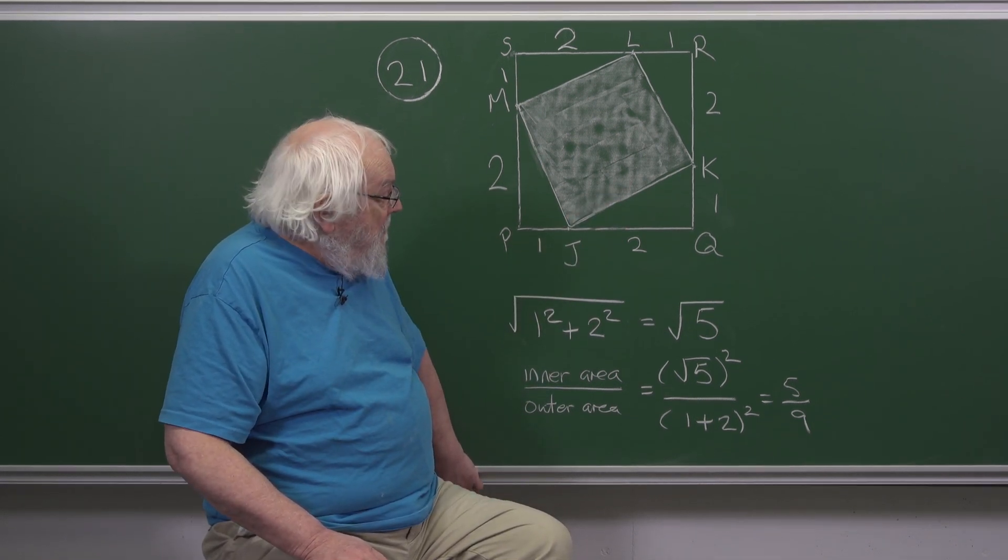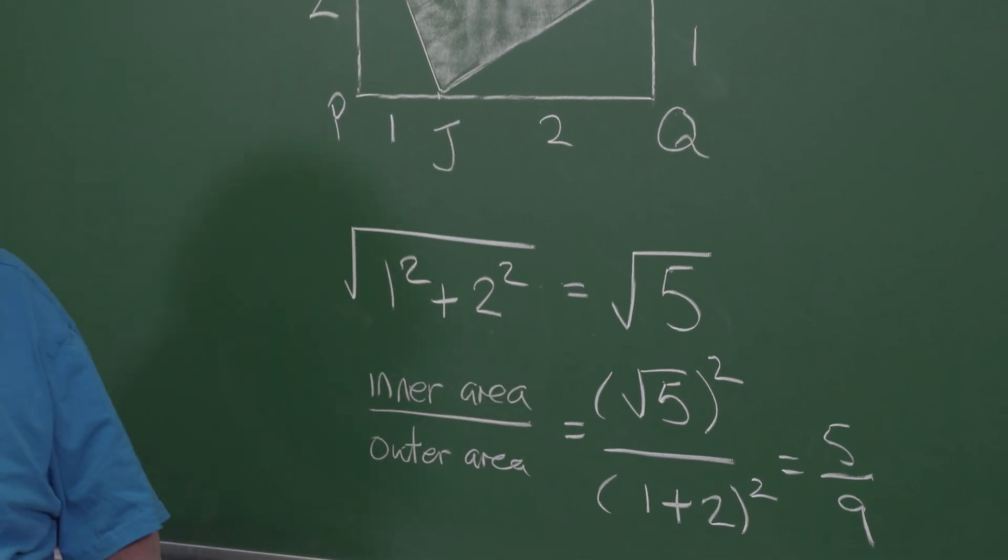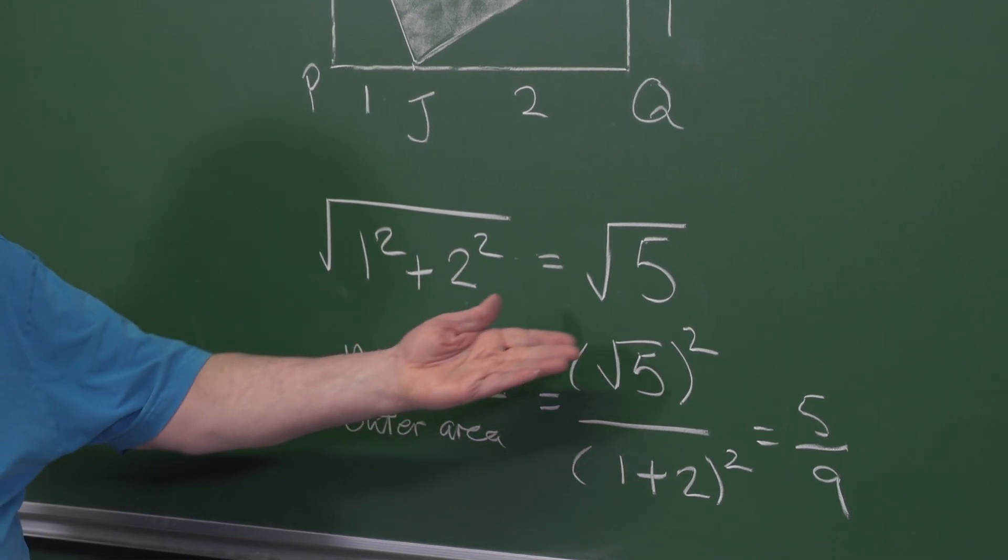...has length the square root of the sum of the squares of 1 and 2. That's Pythagoras' theorem. That's just root 5.